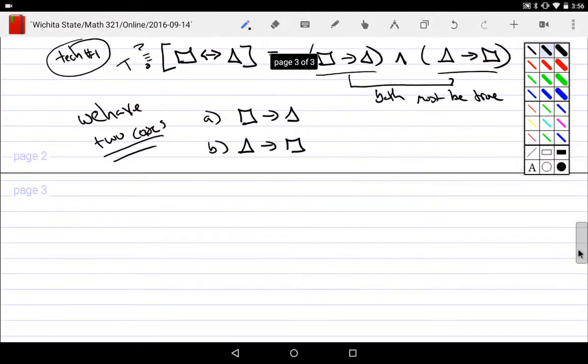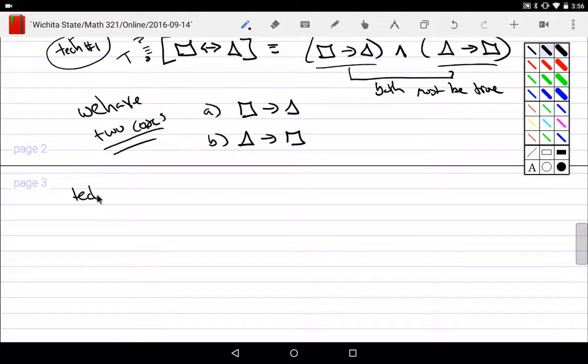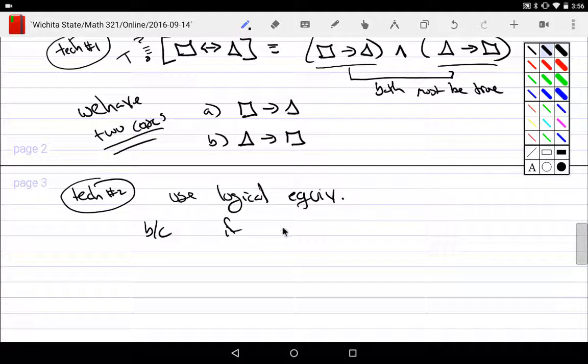On the other hand, a second technique to use is just simply use logical equivalencies. Well, why can I use logical equivalencies? Well, because if you had a P if and only if Q actually was a tautology, that means that P is logically equivalent to Q.